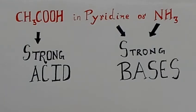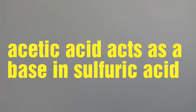Points to remember from this question: acetic acid in pyridine or liquid ammonia — acetic acid behaves as a strong acid whereas pyridine or ammonia acts as strong bases. Also, acetic acid acts as a base in sulfuric acid.